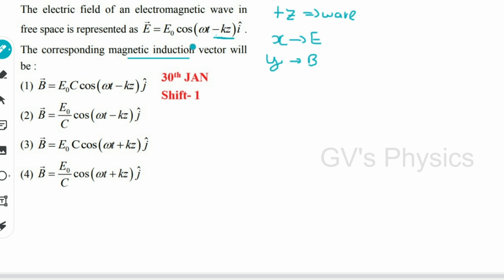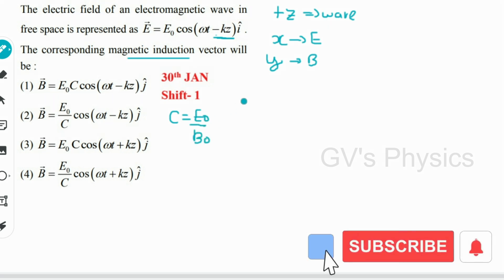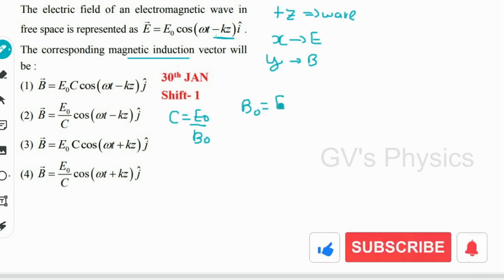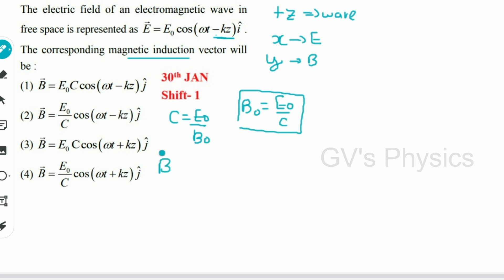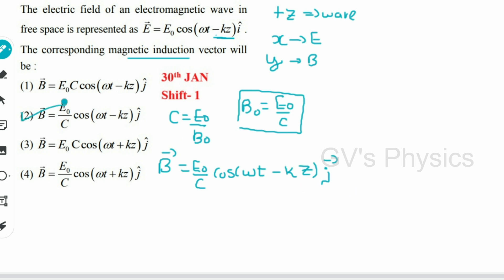We find B₀ using c = E₀/B₀, so B₀ = E₀/c. Writing the full equation: B = (E₀/c) cos(ωt − kz) ĵ. Checking the options, option 2 is the right answer.